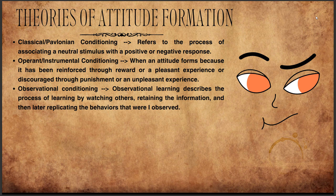Coming on to the theories of attitude formation. The first is classical or Pavlovian conditioning, which refers to the process of associating a neutral stimulus with a positive or negative response. For example, a child will eventually or unintentionally learn that their neighbor has bad behavior by observing and taking in others' ideas and thoughts.